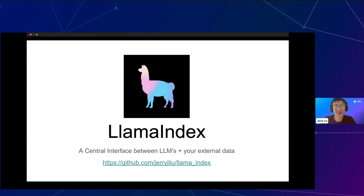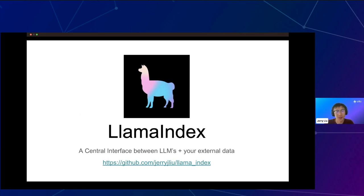Thanks so much, Emily. I'll be doing a short presentation and then afterwards I'll have a chat with Frank. LLAMA Index is a central interface between large language models and your external data. It exists as a GitHub open source project. We have an ecosystem of different projects within the LLAMA Index organization, but today we'll mostly talk about the core repo and the toolkits that it offers.